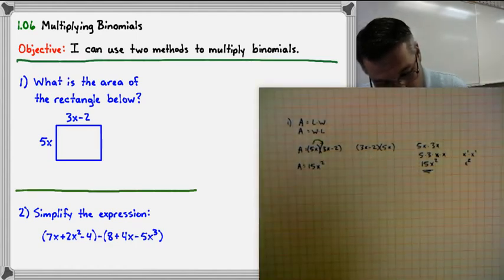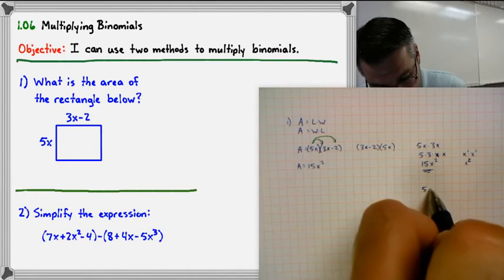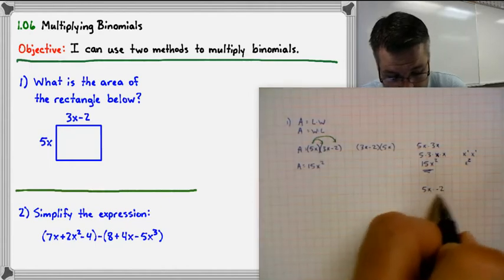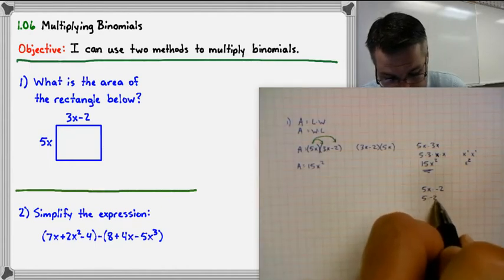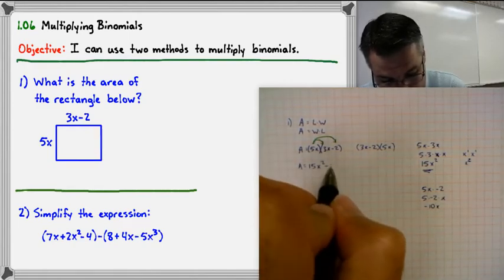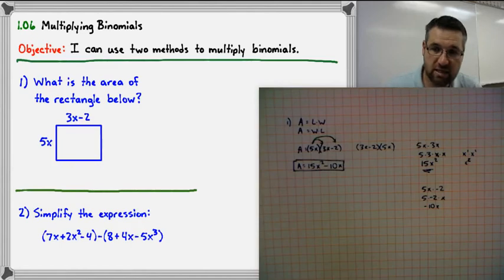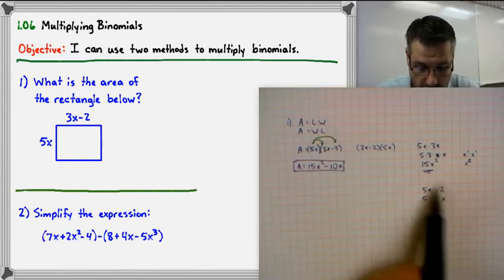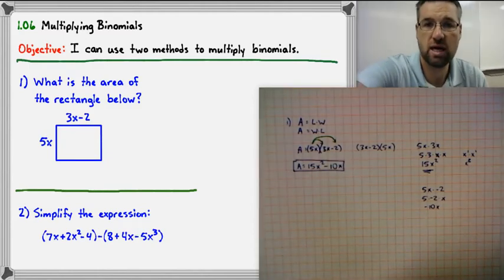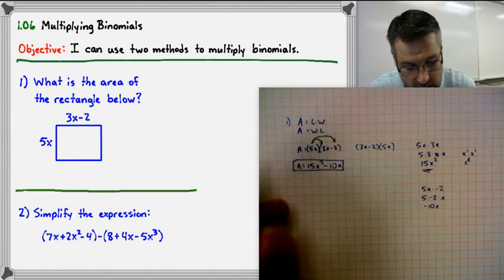For the next part, 5x times negative 2: rearranging, we have 5 times negative 2 times x, which simplifies to negative 10x. So our area expression is 15x squared minus 10x. You don't necessarily have to rearrange every time — you can shortcut it and just say 5 times 3 is 15 and x times x is x squared.